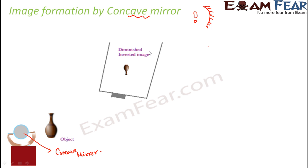You might ask why we are seeing the image here. The object is on this side of the mirror and the image is also formed on the same side. Since the object and the image are both formed on the same side of the mirror, we can actually get this image on the screen.